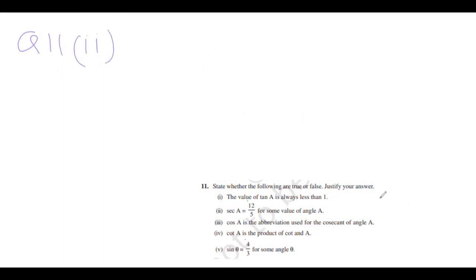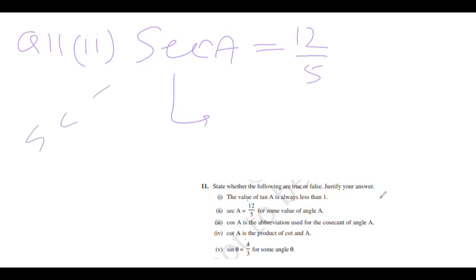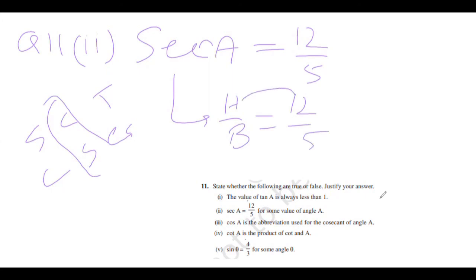Second part: sec A = 12/5 for some angle. Sec is the reciprocal of cos, and cos = B/H, so sec = H/B = 12/5. Hypotenuse over base — since hypotenuse is always the longest side, H > B, so H/B > 1. The value 12/5 > 1, which is valid for some specific angle. So this statement is true.